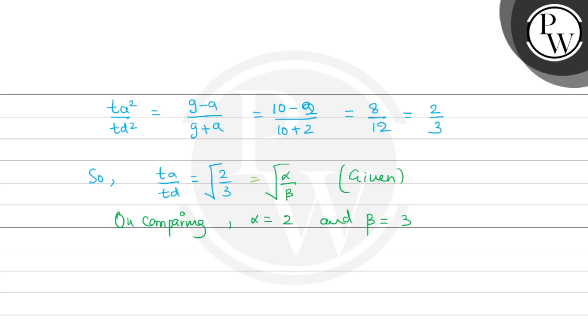So the minimum value of alpha plus beta will be equal to 2 plus 3, that is 5. So the answer is alpha plus beta equals 5. Hope you understood the explanation well. Best of luck.